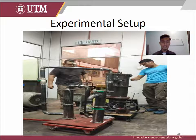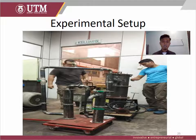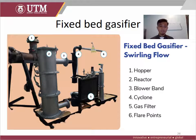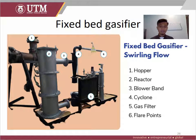The picture shows the experimental setup for the downdraft fixed bed gasifier to be used for this undergraduate project. There are six main components in the fixed bed swirling flow gasifier. The first is the hopper, where the feedstock will be loaded. Second is the reactor, where conversion occurs. Third is the blower band. Fourth is the cyclone. Fifth is the filter, where the gas content will be analyzed. And last is the flare point.